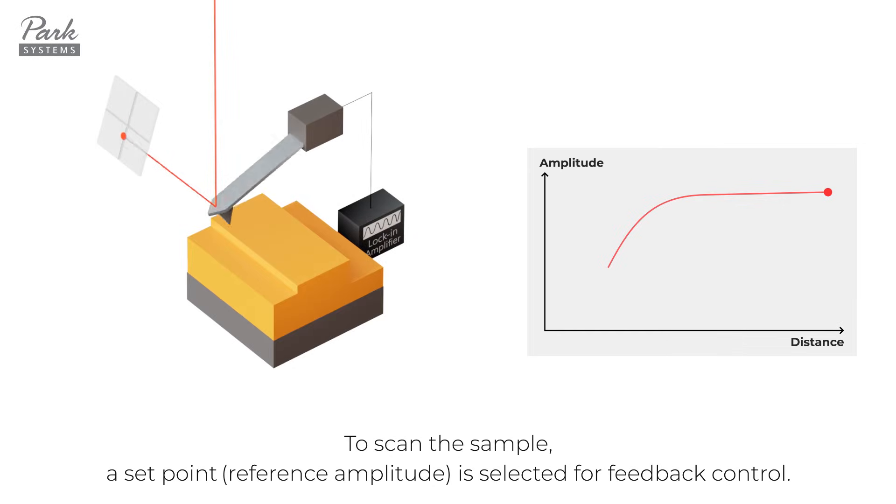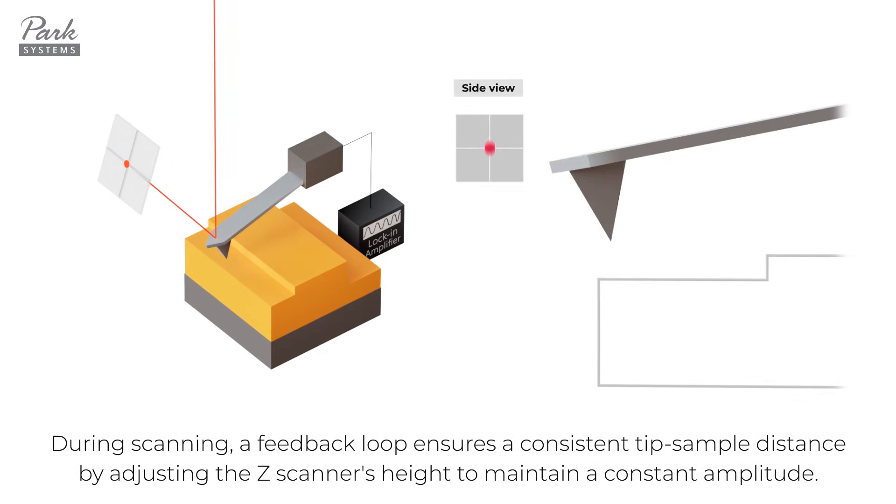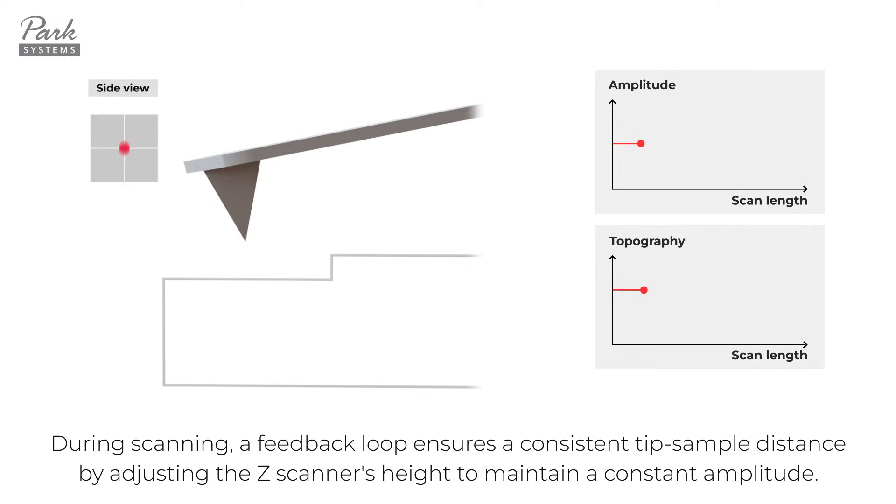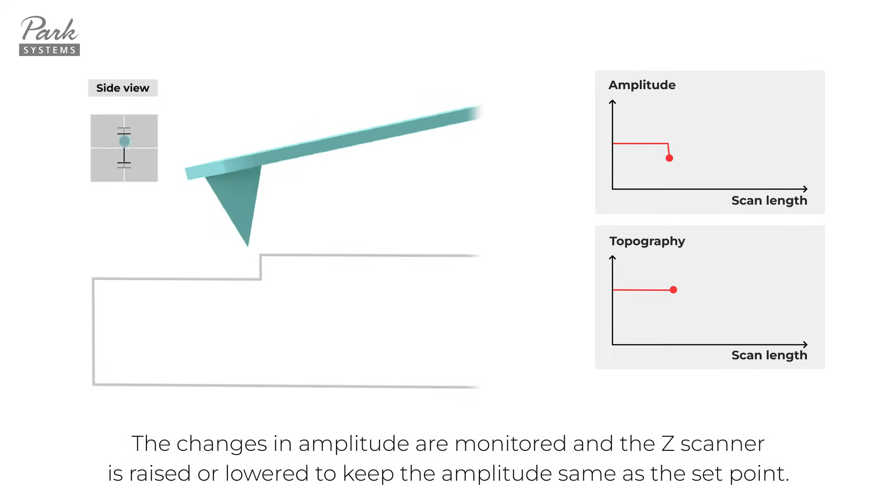To scan the sample, a set point is selected for feedback control. During scanning, a feedback loop ensures a consistent tip-sample distance by adjusting the Z-scanner's height to maintain a constant amplitude. The changes in amplitude are monitored and the Z-scanner is raised or lowered to keep the amplitude same as the set point.